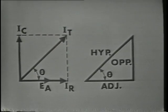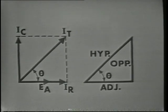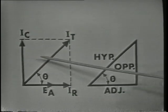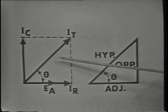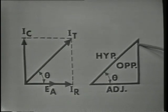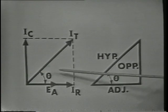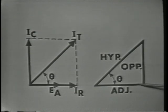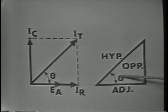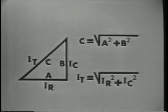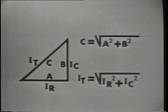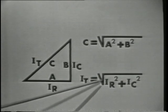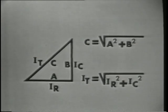IR is the same as the adjacent side of the triangle — IR compares to the adjacent side, IC compares to the opposite side, and IT would equal the hypotenuse of the triangle. Since the circuit currents are so closely related to the sides of the triangle, the same geometric theorems can be applied. Thus side C, the hypotenuse, is equal to the square root of side A squared plus B squared. Therefore, IT, or the total current, is equal to the square root of IR squared plus IC squared.